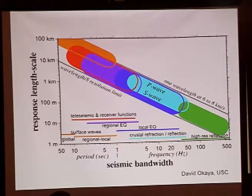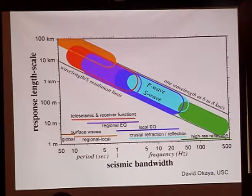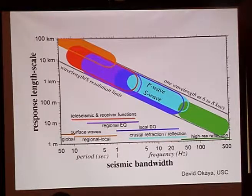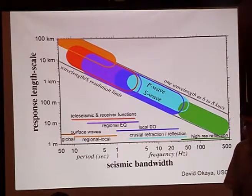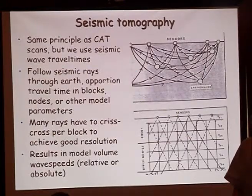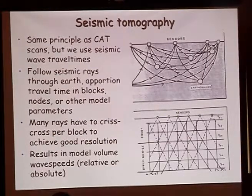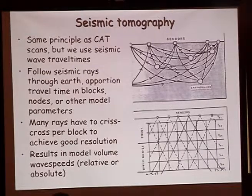Broadband seismometers are generally used in passive seismology. In active source seismology, geophones can record up to very high frequencies — the trick is to have sources that generate those high frequencies. I'm going to give a very brief overview here, as later talks will go into much more detail about these techniques. Today I'll show results from body wave tomography, surface wave tomography, and receiver function results.